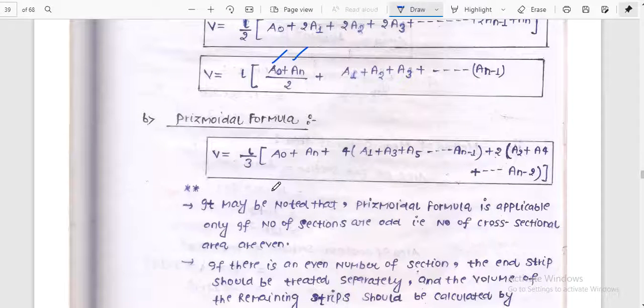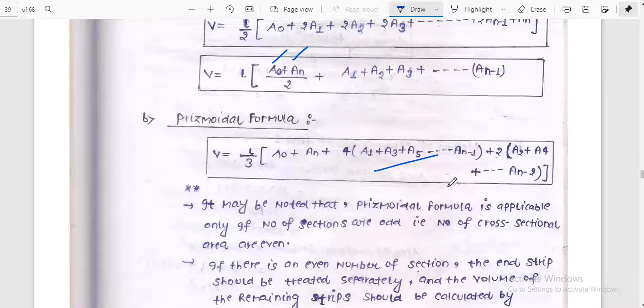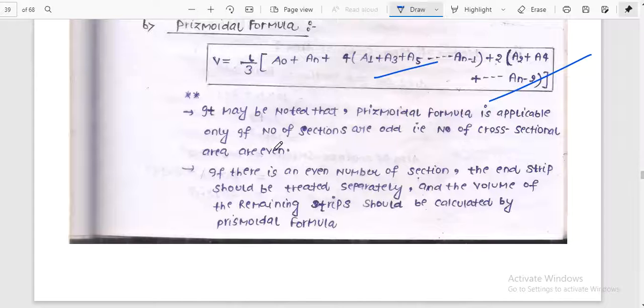Prismoidal area is L by 3 times A0 plus An plus 4 into odd terms plus 2 into even areas. 4 into odd areas plus 2 into even areas. It may be noted that prismoidal formula is applicable only if the number of sections are odd. The number of section is odd or number of cross section areas is even. Also, if there are even number of cross sections, the nth strip should be treated separately and the volume of remaining strip should be calculated by prismoidal formula.